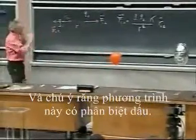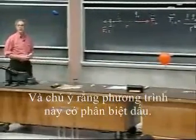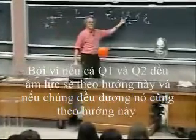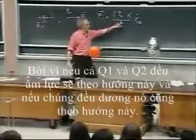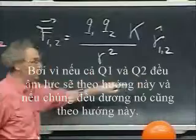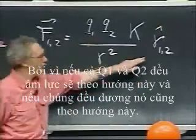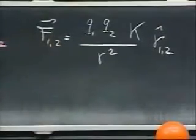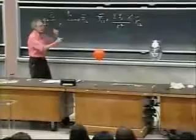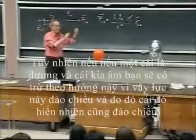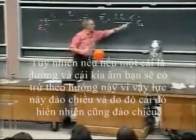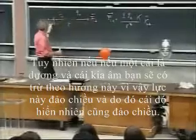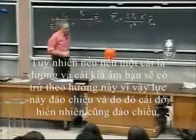Notice that this equation is sign sensitive, because if Q1 and Q2 are both negative, the force is in this direction. And if they're both positive, it's also in this direction, as I have it. However, if one is positive and one is negative, you get minus this direction, so the force flips over, and that one then obviously also flips over.